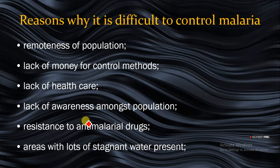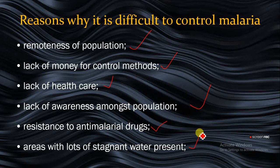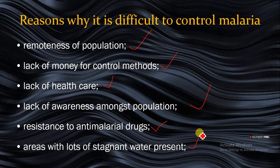The reason why it is difficult to control malaria: there are certain areas in the world where control is quite difficult. Major reasons include remoteness of population and lack of money for control methods, lack of health care, lack of awareness among the population, resistance to anti-malaria drugs, and areas with lots of stagnant water present — particularly in less economically developed countries.